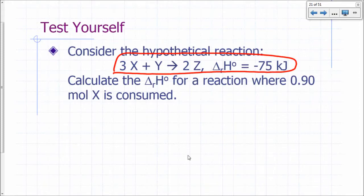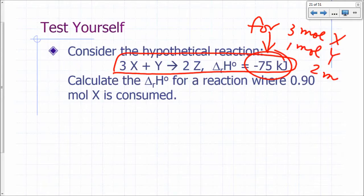The number that you attach here corresponds to the situation where three moles of X are involved, one mole of Y is involved, and two moles of Z are involved. In other words, that corresponds to the moles involved in your balanced equation.